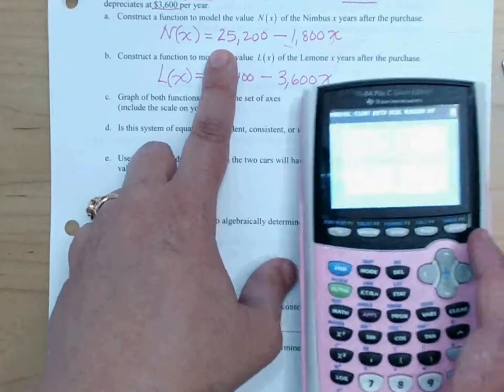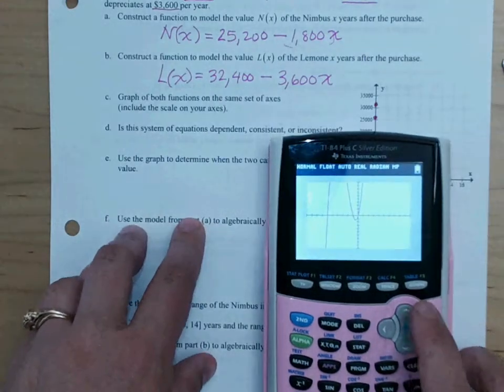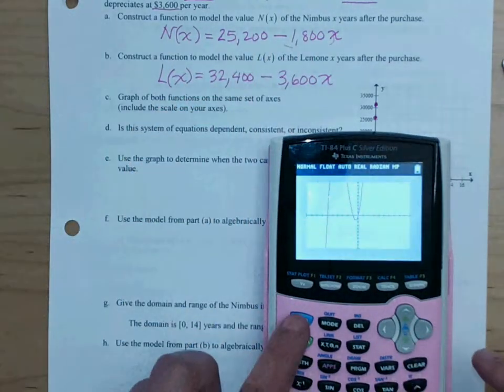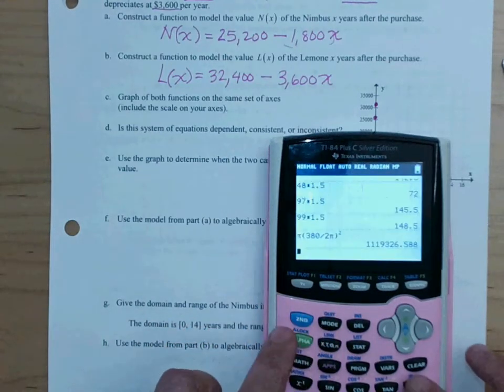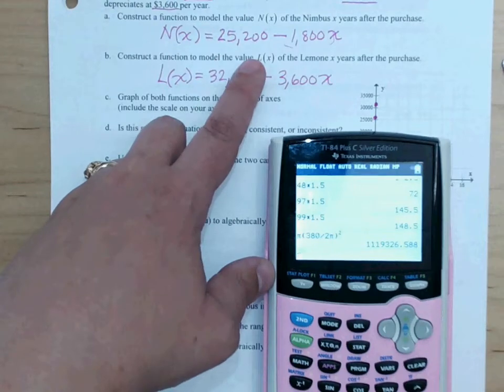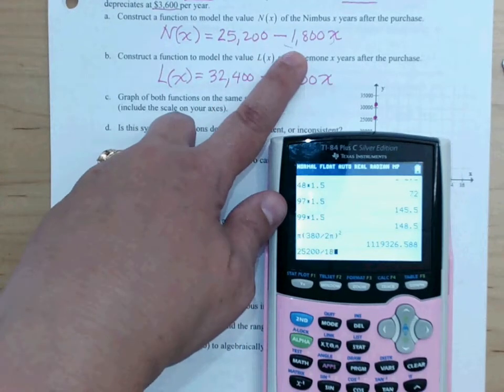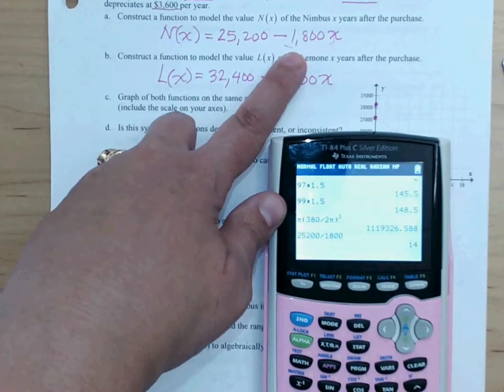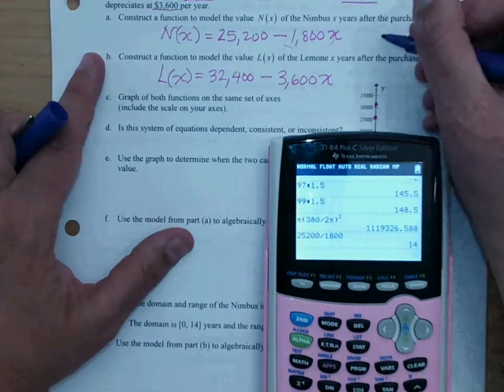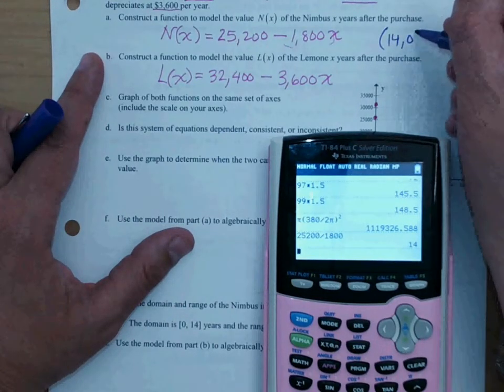I'm going to be demonstrating how to use the graphing calculator more in class. But for now, how could we figure out when the value of the car is zero? Right. Take the total value, and we could divide it by the depreciation. To figure out, in 14 years, it will have a value of zero dollars.